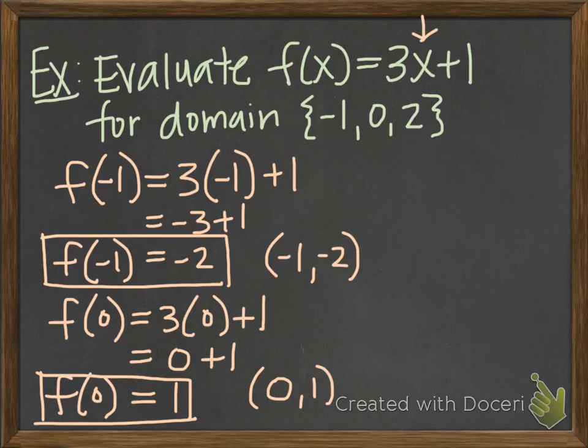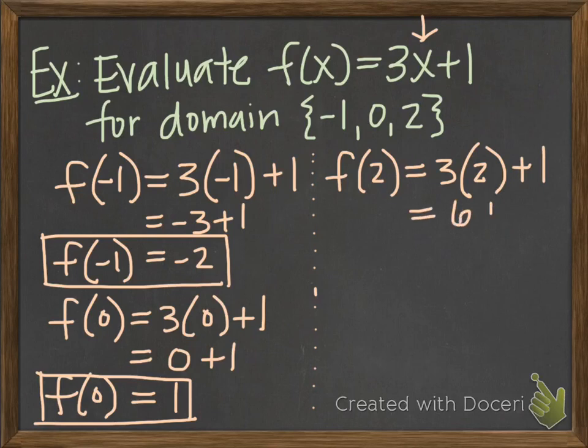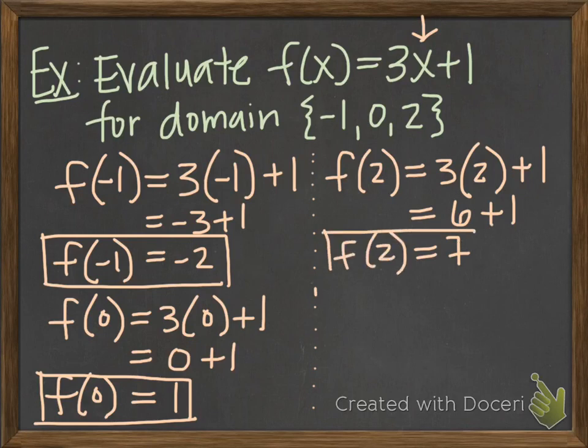We've got one more. I'm going to erase this part just so I have a little bit more room. Now we're going to evaluate when our x is 2. So for my function, when my input is 2, my output is found by 3 times 2 plus 1. 3 times 2 is 6, 6 plus 1 is 7. So when my input is 2, my output is 7.